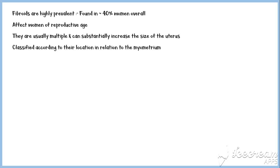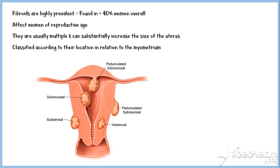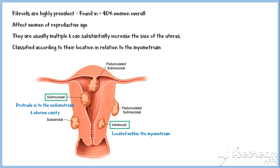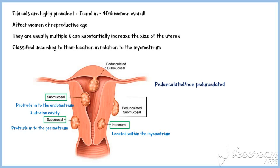Intramural fibroids are located within the myometrium. Submucosal fibroids protrude into the endometrium and the uterine cavity. Subserosal fibroids protrude outwards into the perimetrium. These fibroids could be either pedunculated or non-pedunculated. Pedunculated fibroids are connected to the uterus by a stalk, while non-pedunculated fibroids do not have a stalk.